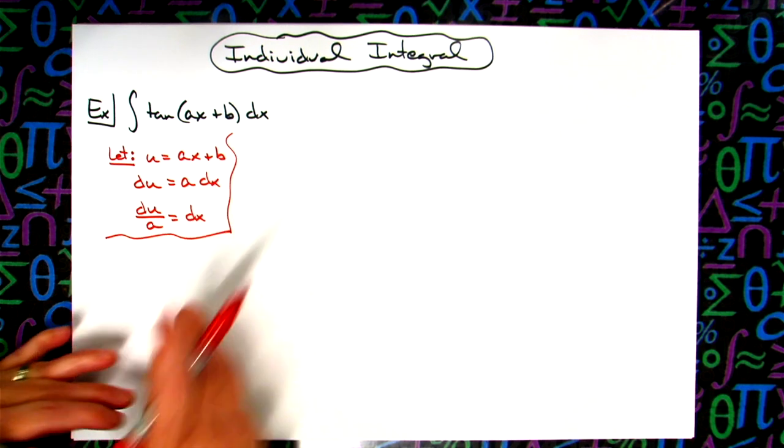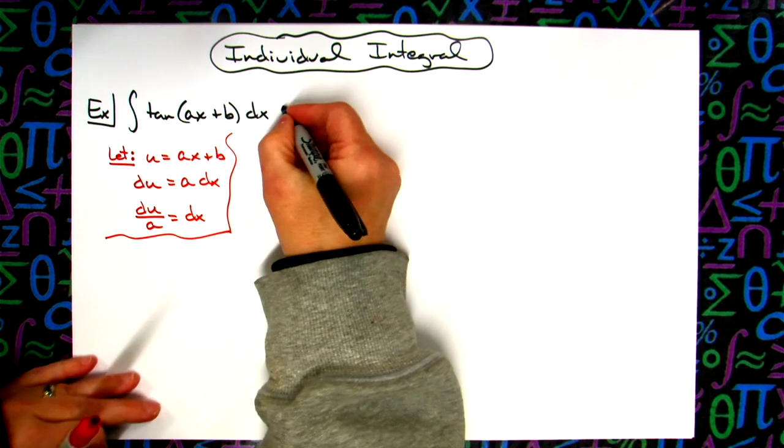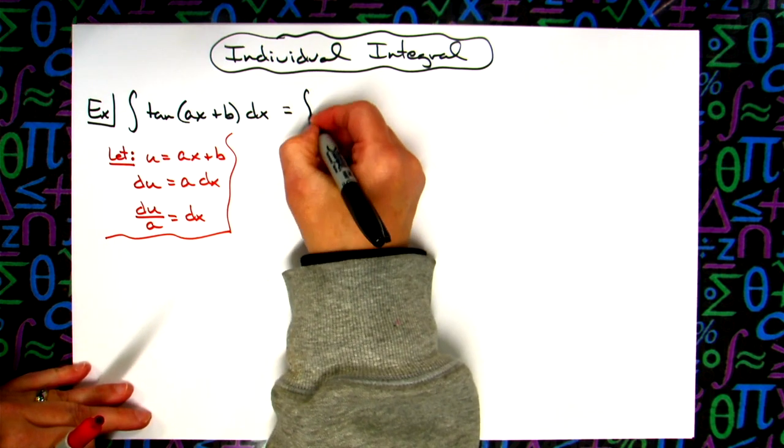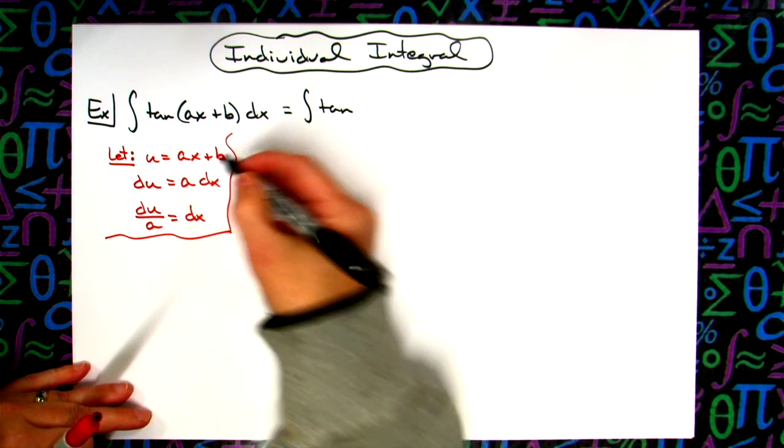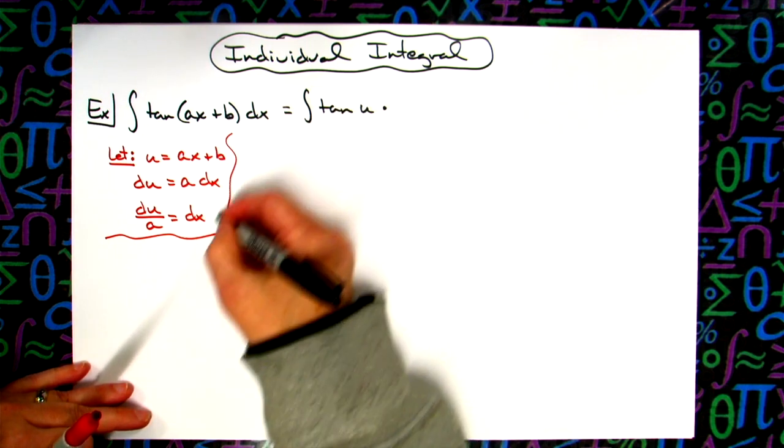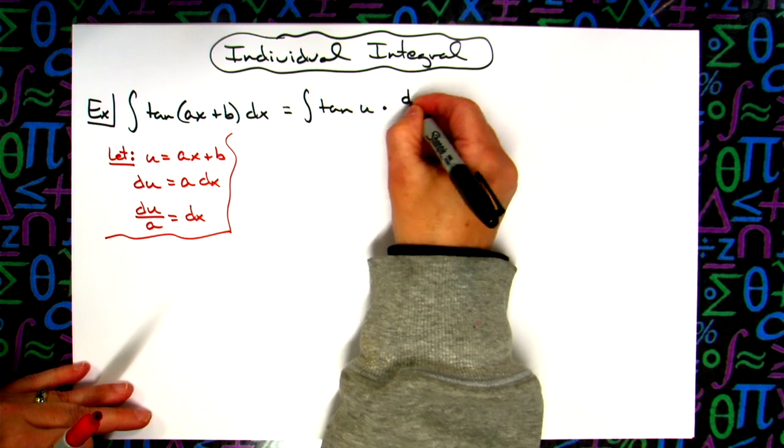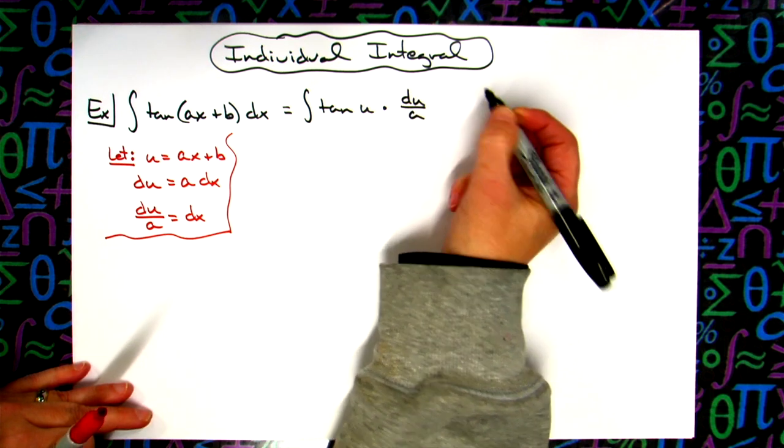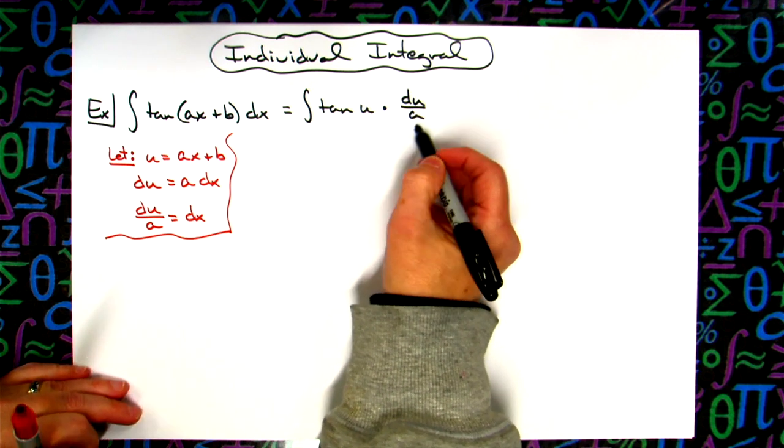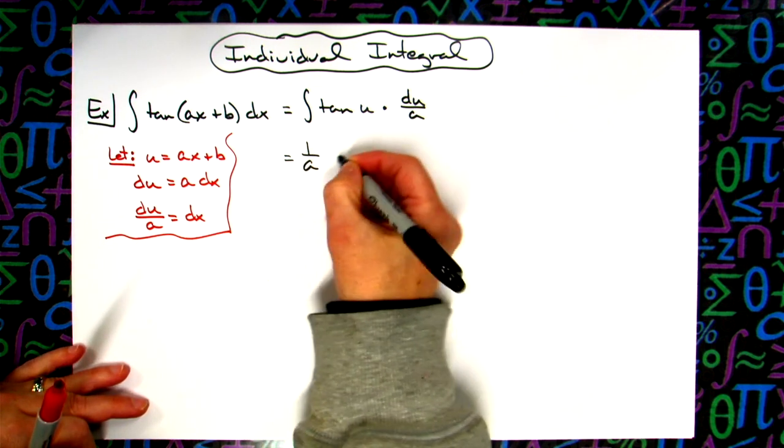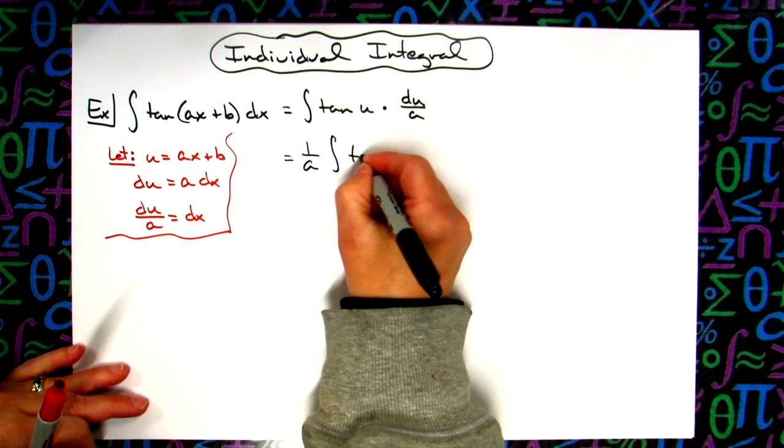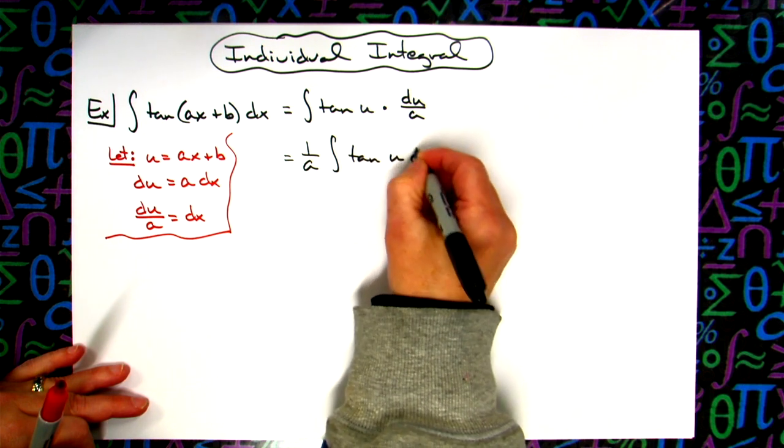Now I'm going to come back to this original integral and do some substitutions. I'm going to have the integral of tangent, replacing ax plus b with u, and replacing dx with du over a. That lets us pull out 1 over a in front, so we have 1 over a times the integral of tangent u du.